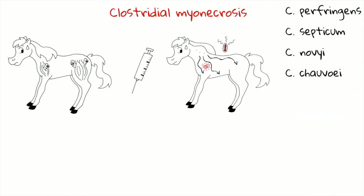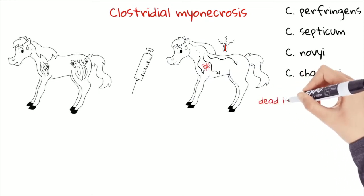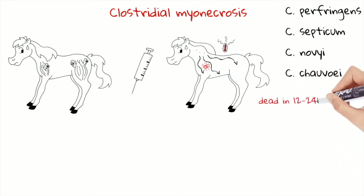These infections diffuse very quickly into muscle fasciae. In a few hours they can arrive in different areas of the body, causing toxemia, multi-organ failure, coma, and death in 12–24 hours.